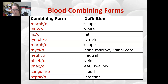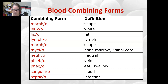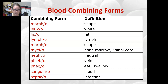Leuco is white; limpo is fat; lympho is lymph — here that gives us lymphocyte; morpho is shape; myelo means bone marrow or spinal cord, but in our context talking about blood, it's bone marrow. Neutro means neutral, and we have that in neutrophils; flebo is vein, for phlebotomy, which is how we get blood; phago is to eat or swallow, for phagocytosis; sanguino is blood; and septico is infection.